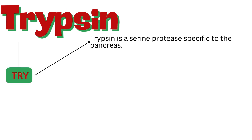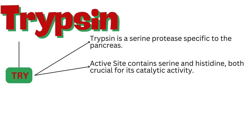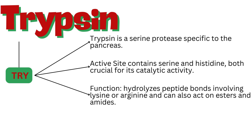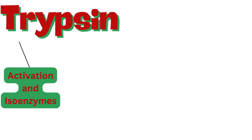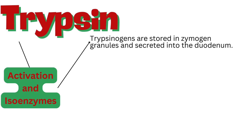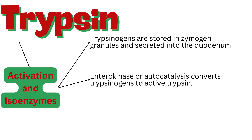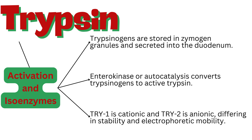Trypsin is a serine protease specific to the pancreas. Its active site contains serine and histidine, both crucial for its catalytic activity. Its function is to hydrolyze peptide bonds involving lysine or arginine, and it can also act on esters and amides. The human pancreas synthesizes two major trypsins — trypsin-1 and trypsin-2 — as inactive proenzymes called trypsinogens. Trypsinogen-3 is a minor form. Trypsinogens are stored in zymogen granules and secreted into the duodenum, where enterokinase or autocatalysis converts them to active trypsin. Trypsin-1 is cationic and trypsin-2 is anionic, differing in stability and electrophoretic mobility.